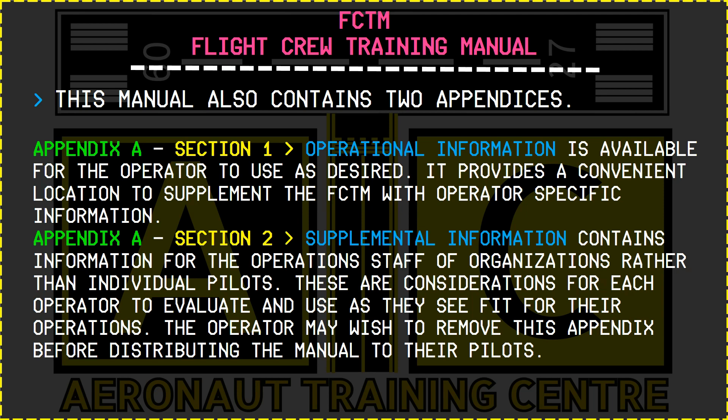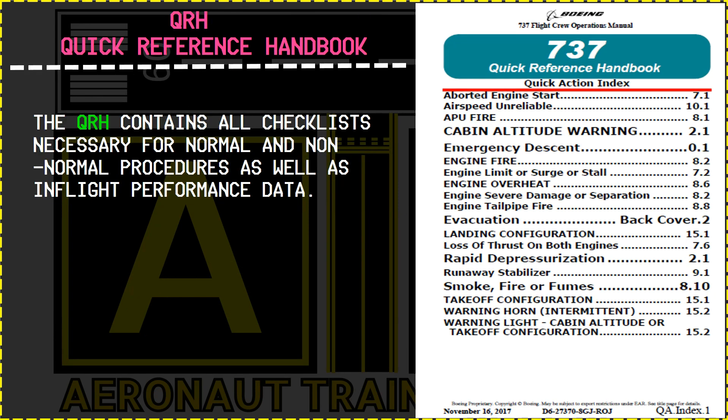It must be noted that in the event of conflict, the procedures and restrictions published in the FCOM, QRH, MMEL, and MEL — i.e. minimum equipment list — or DDG take precedence over the information, techniques and recommendations in the FCTM. Now let's talk about QRH, which stands for Quick Reference Handbook.